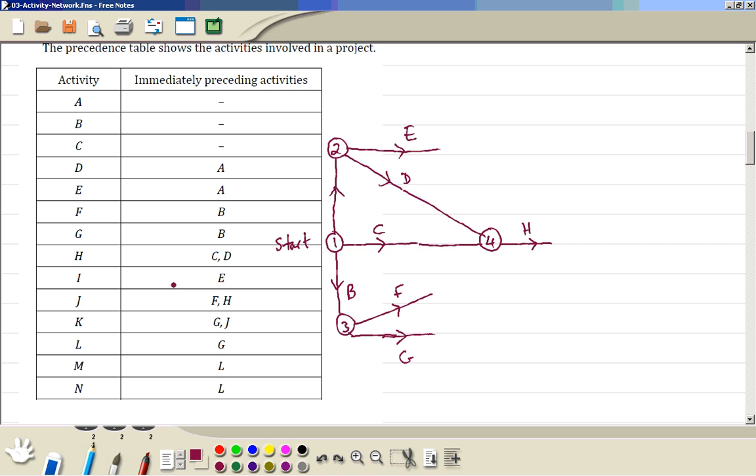Next I depends on E, so that's 5 and the event is I. Next J depends on F and H, so H and F has to join together. So the event number 6 and this is J.